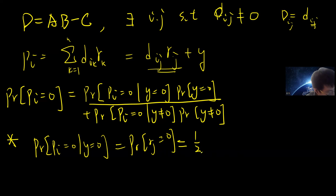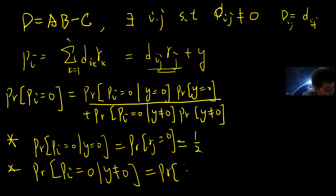And what's the probability of P_i equals 0 but y is non-zero? In this case, if P_i is 0 and y is non-zero, then the only case is that D_ij R_j must equal negative y. But R_j can only be 0 or 1, so R_j must be 1.